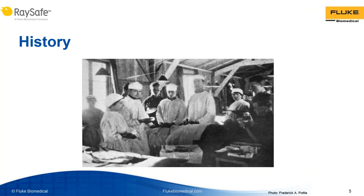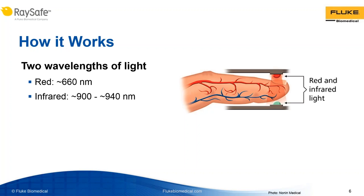Here's how it works. Pulse oximeters shine light through the human body — typically a finger, but also feet, earlobes, and foreheads are used. Some oximeters reflect light off the body part rather than shine light through it. In the most common configuration, the oximeter shines two different wavelengths of light through the patient's finger using LEDs, one at a time. The two wavelengths are red, approximately 660 nanometers, and infrared, approximately 900 to 940 nanometers. These wavelengths are approximate because every manufacturer might be a little different. Red is the slowest frequency of light in the visible spectrum, and infrared is an even slower frequency just outside the visible spectrum.